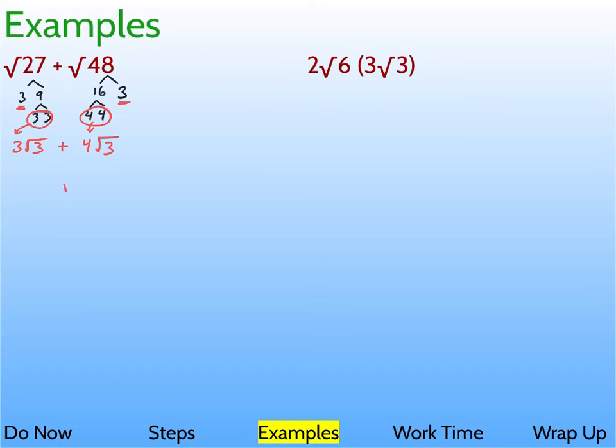So essentially, just rewriting this problem, we have instead of square root of 27 plus square root of 48, we have 3 radical 3 plus 4 radical 3. And now, since they're both radical 3s, we can just add the coefficients, the 3 plus the 4. And we got 7 radical 3 in the end.